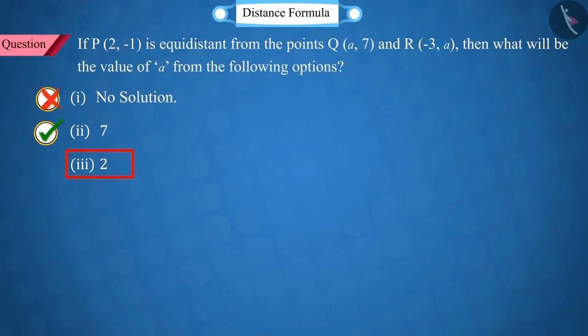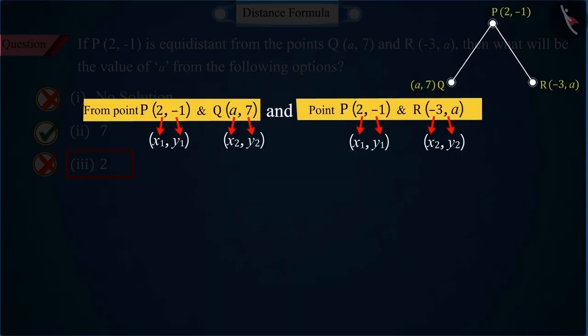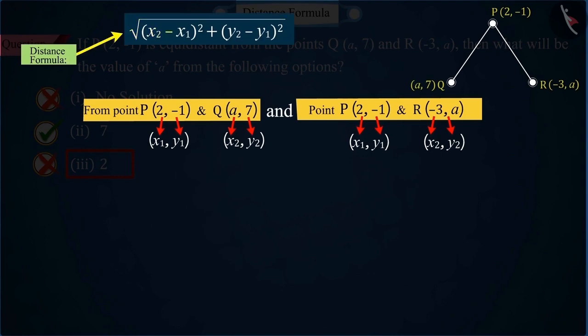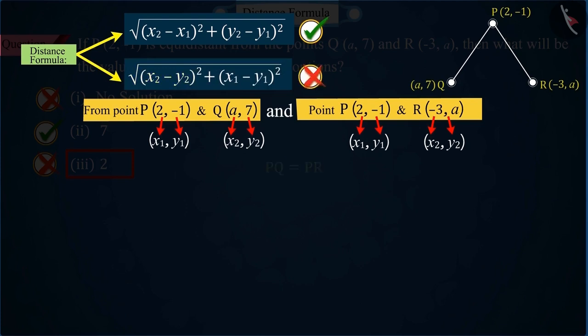If you have selected option 3, then it is also a good try, but this is also the wrong answer. Because in place of the square root of the square of x2 minus x1 plus the square of y2 minus y1, we put the square root of the square of x2 minus y2 plus x1 minus y1. And on the same basis, you solve it further.